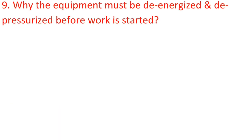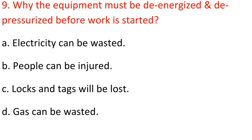Question 9: Why must equipment be de-energized and depressurized before work is started? A) Electricity can be wasted, B) People can be injured, C) Locks and tags will be lost, D) Gas can be wasted. Answer: B) People can be injured.